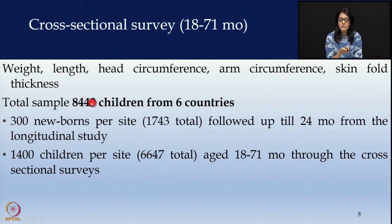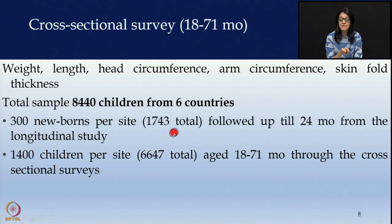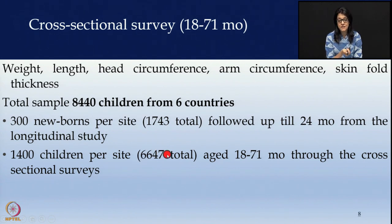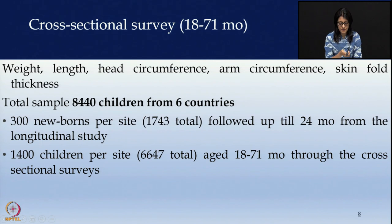A total of 8440 children were taken from 6 different countries — 300 newborns per site, giving 1743 total followed up till 24 months in the longitudinal study, and 1400 children per site giving about 6647 children aged 18 to 71 months through the cross-sectional survey. This was the design of the study.